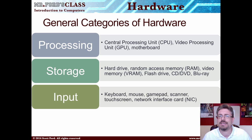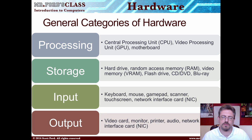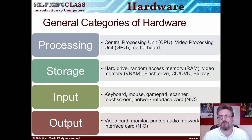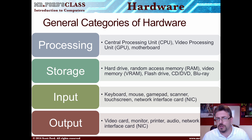The third category is input — input devices for getting information into the computer. Things here might be like your keyboard, your mouse, gamepad, scanners, things along those lines. And the fourth category is output. Computers would be pretty useless if we couldn't get information out of them. Output is getting information out of our computer — for example, a video card, a monitor, printer, audio. You're listening to me, you're hearing noise.